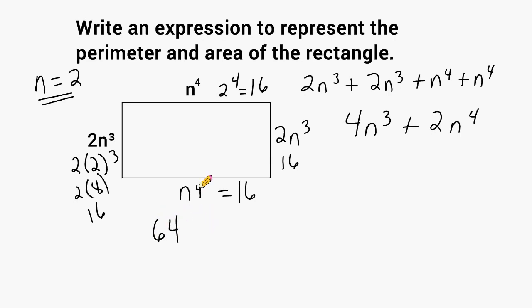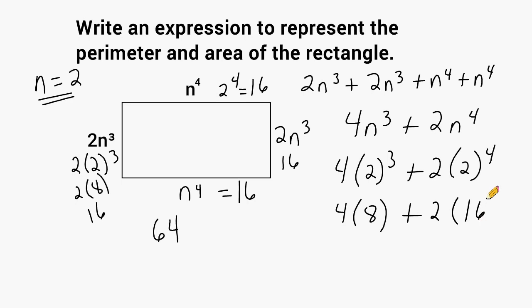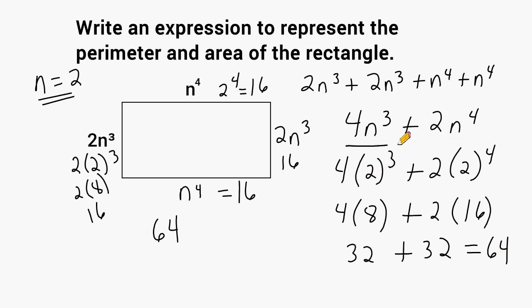We should understand that each side isn't really 16 — we're just checking for equivalence. Now let's plug n equals two into our expression 4n³ + 2n⁴: four times two to the third is four times eight, which is 32; and two times two to the fourth is two times 16, which is 32. Adding those gives 64, confirming this expression is the correct one to represent the perimeter of this rectangle.